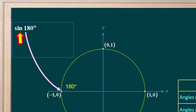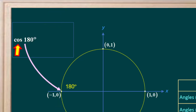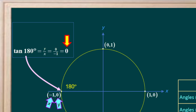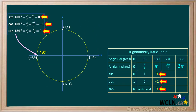Now we'll go to 180 degrees and start by finding the sine. The sine is y over r, which is 0 over 1, or 0. Next we'll determine the cosine of 180 degrees. The cosine is x over r, which is negative 1 over 1, or negative 1. Now we'll find the tangent of 180 degrees. The tangent is y over x, which is 0 over negative 1, or 0. We'll record the values for sine, cosine, and tangent of 180 degrees in our table.